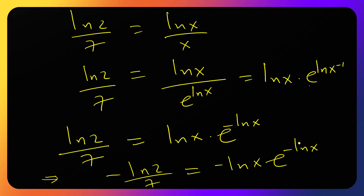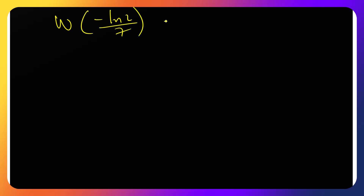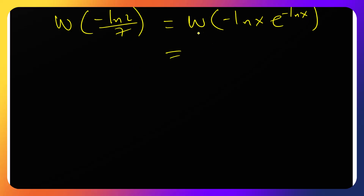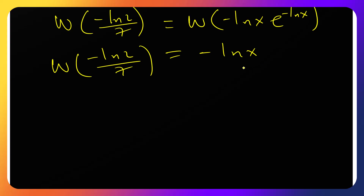Now we can apply the W function to both sides. Taking W of both sides: W(−ln(2)/7) = −ln(x), since the W function of (p·e^p) gives p, so the right side simplifies to −ln(x).